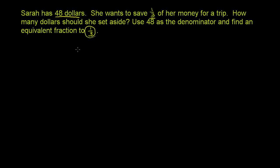So what they want us to do in this problem is they want us to say, we want 1/3 of her money, but we want to write this as an equivalent fraction where we have 48 in the denominator. So this is equal to something, some blank up here, this is equal to something over 48.